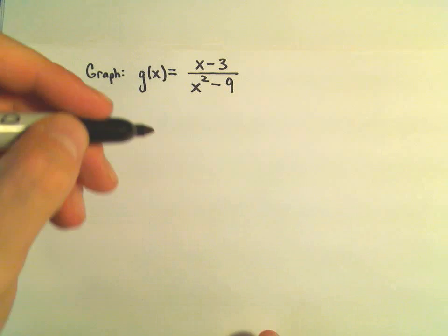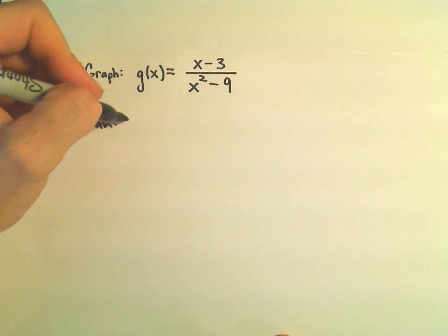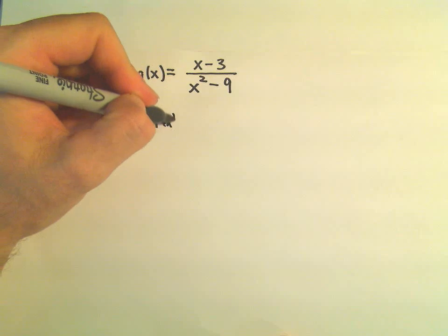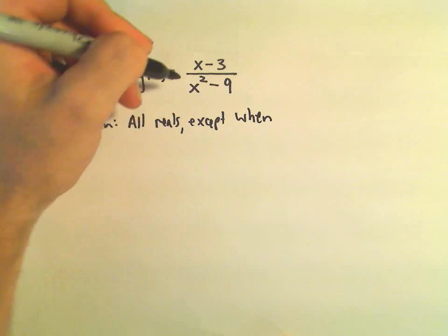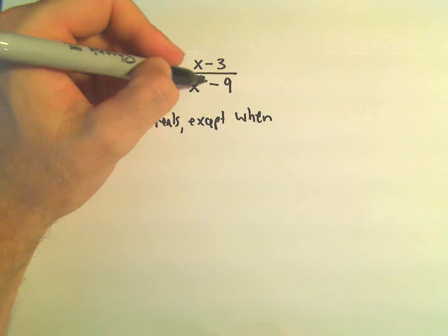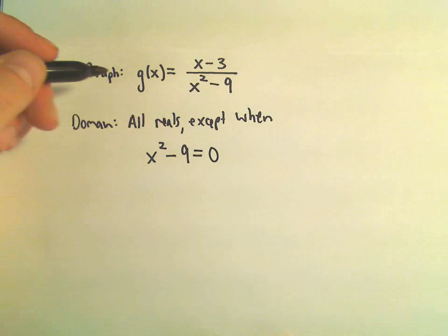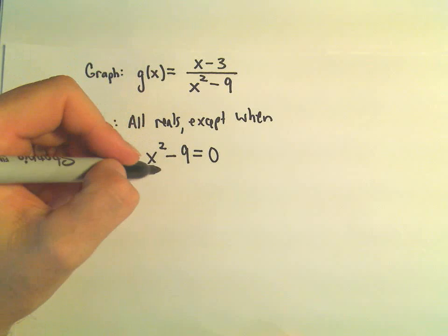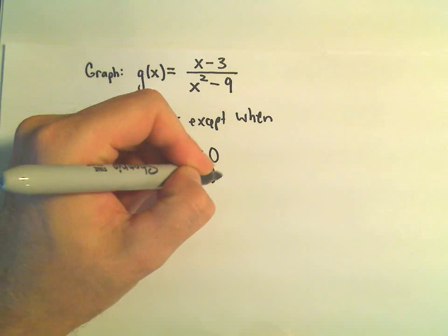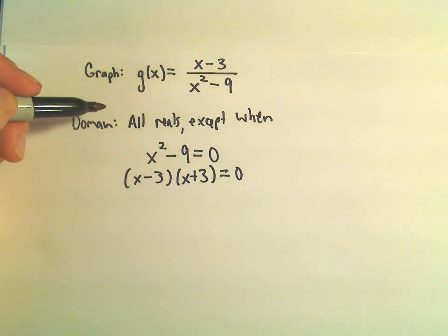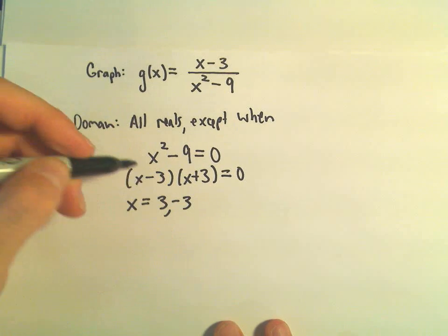So let's think about the domain of this function. The domain would be all reals except when x squared minus 9 equals 0, because we don't want to divide by 0. We can factor x squared minus 9 as x minus 3 times x plus 3 equals 0. So our domain is all x's except for positive 3 and negative 3.